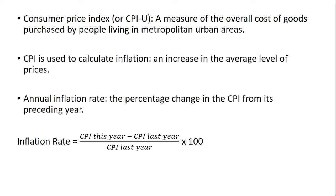Let me present the formula for the annual inflation rate, which we'll be calculating at the end of this presentation. The annual inflation rate is the percentage change in the CPI from its preceding year. So it would be the CPI in 2017, minus the CPI in 2016, divided by the CPI in 2016, all multiplied by 100, which gives us the inflation rate for 2017.